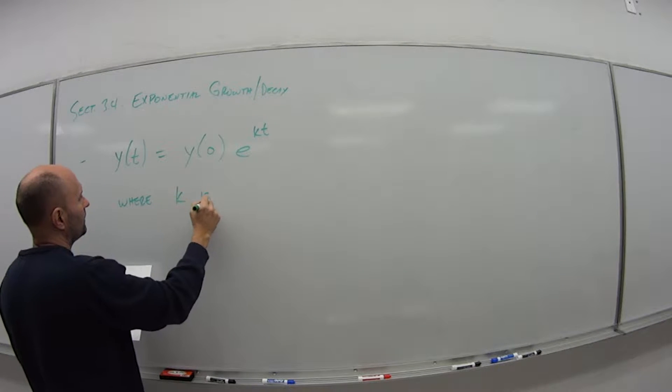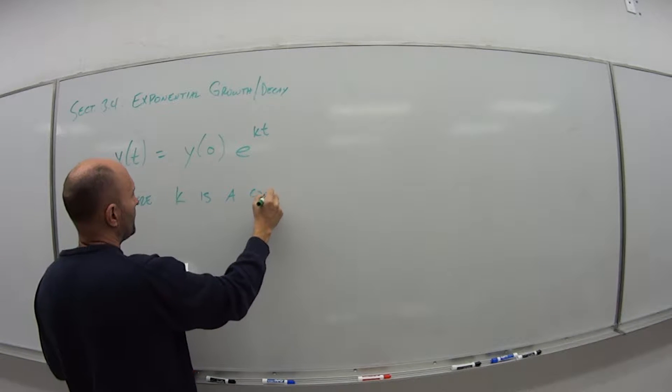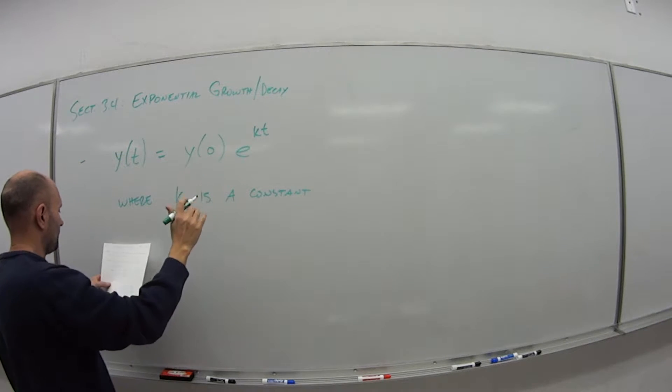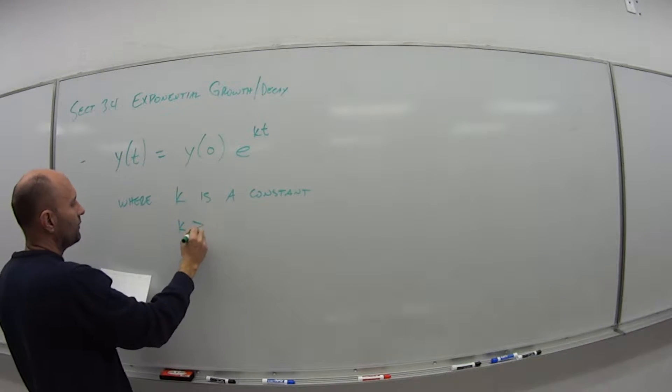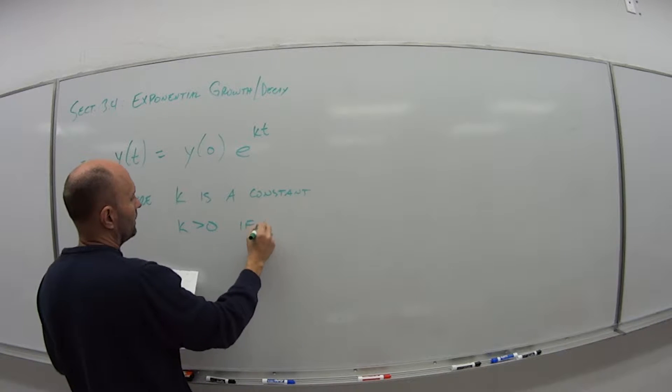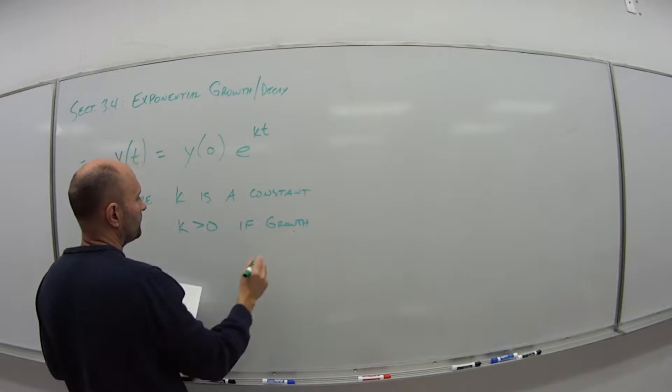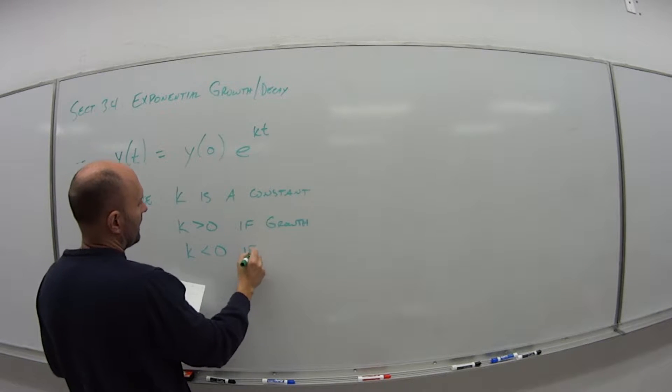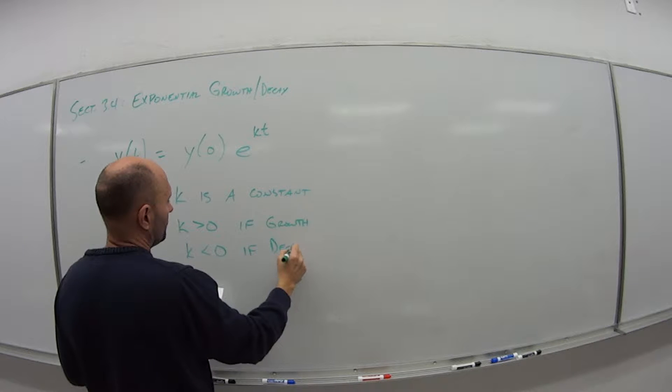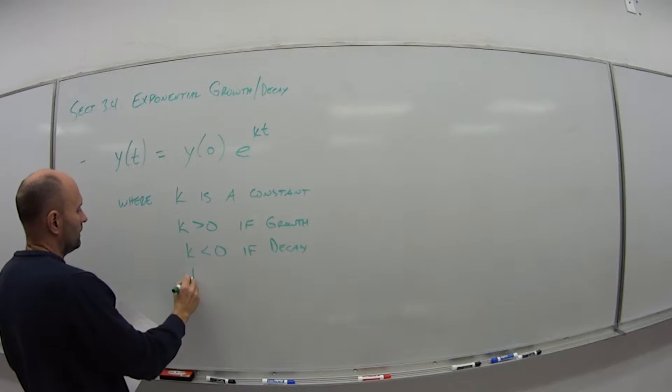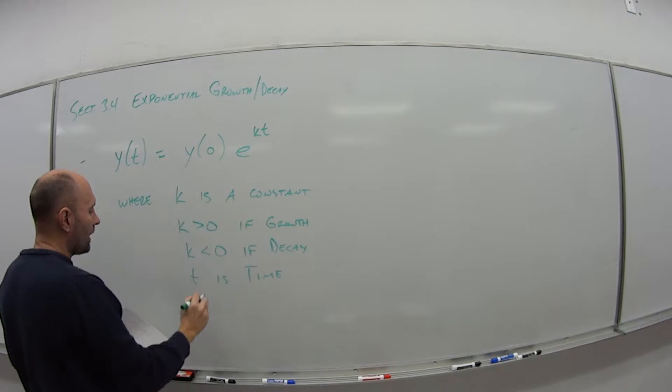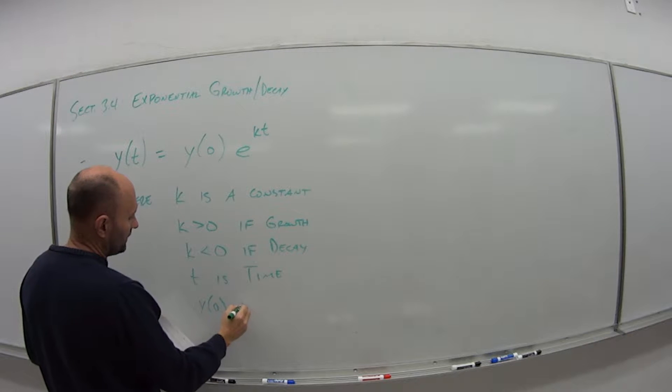So k is a constant, just some number that doesn't change on us. k is greater than 0 if we're talking about growth. k is less than 0 if we're talking about decay. t is time. And y₀ is my starting value.